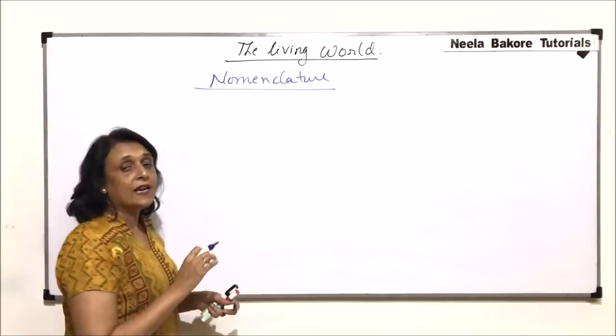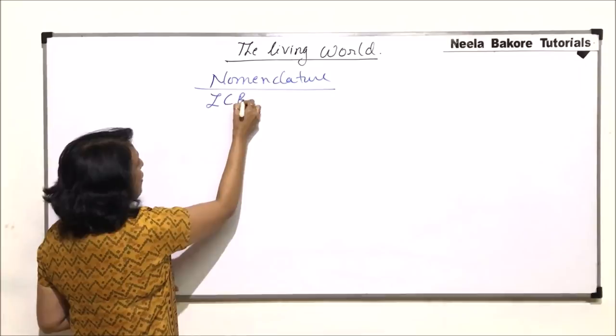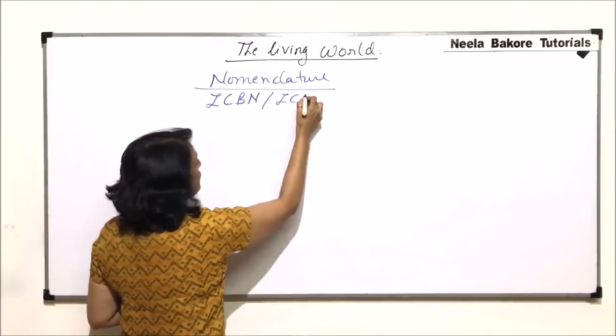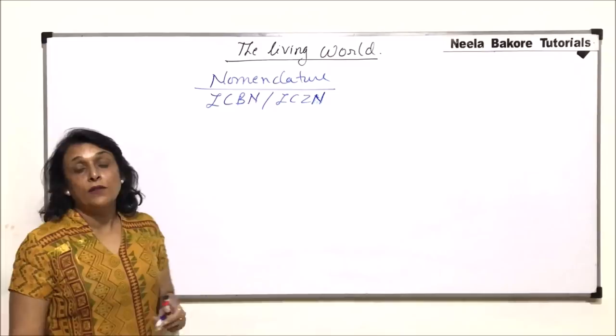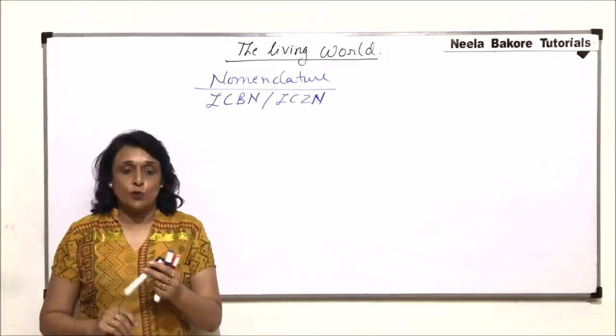There are certain organizations like the International Council of Botanical Nomenclature, and similarly for Zoological Nomenclature. They have designed the rules, and on the basis of these rules, a name for a particular organism or species would be given.